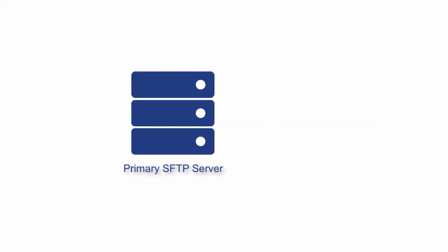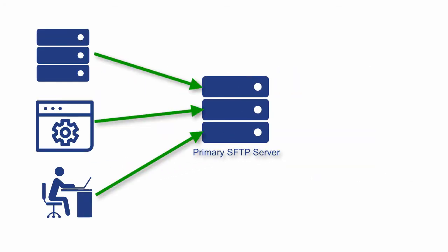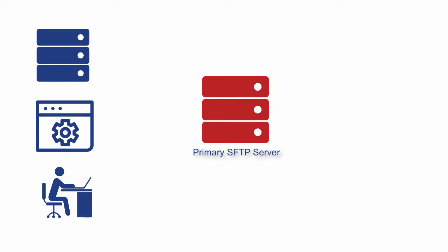Your primary SFTP server can experience planned or unplanned downtimes. This might be caused by a scheduled maintenance or an outright failure. While that server is down, all business operations that rely on it will also have to come to a halt. In many situations, such downtimes, especially if they stretch over extended periods, are simply unacceptable.